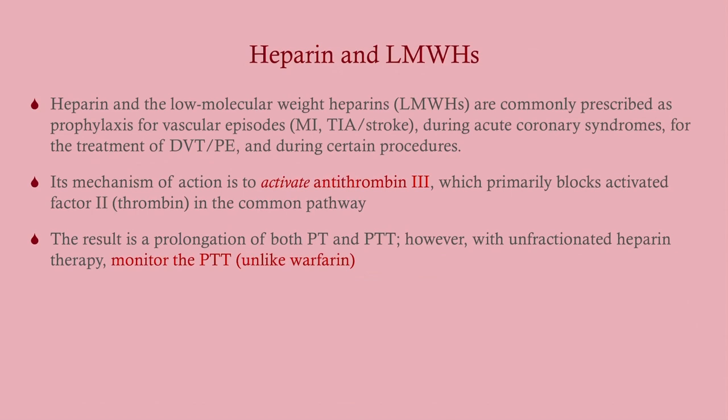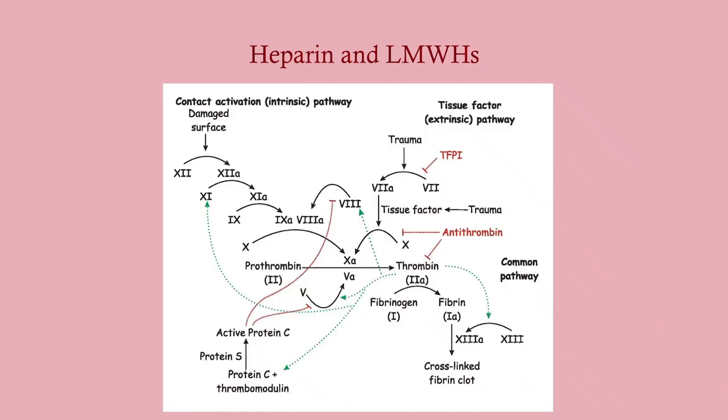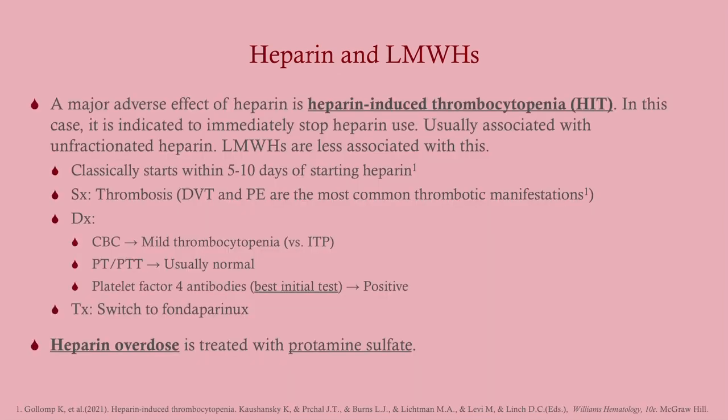Heparin and low molecular weight heparin are commonly given as prophylaxis or treatment for vascular episodes. The mechanism is to activate antithrombin 3, which has an anticoagulant effect. This results in prolongation of both PT and PTT. However, when monitoring response to heparin therapy, we monitor the PTT — unlike warfarin, where we measure the PT. Heparin activates antithrombin, which then inhibits thrombin as well as factor 10. The major adverse effect is HIT — heparin-induced thrombocytopenia.